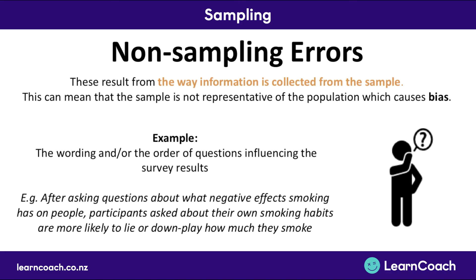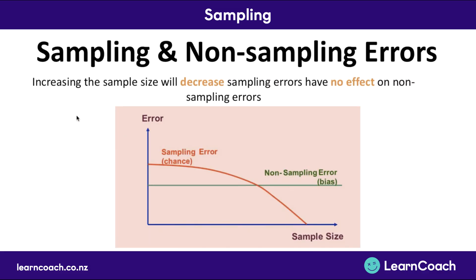For example, after asking questions about the negative side effects of smoking, participants are then asked about their own smoking habits — they're probably more likely to lie or downplay how much they smoke due to the order of questioning. Increasing sample size will decrease sampling errors but will have no effect on non-sampling errors. As sample size increases, sampling error decreases. Sampling error is due to chance, whereas non-sampling error is due to bias and doesn't change with sample size.